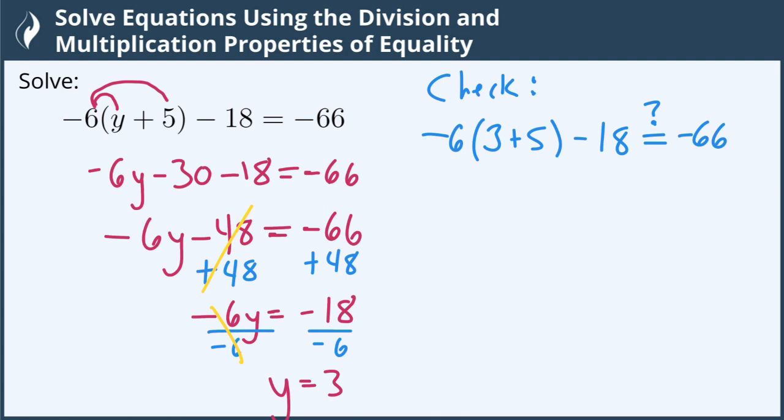We'll simplify the left side to see what it comes out to be. We'll start with what's inside the parentheses. So I now have negative 6 times 3 plus 5 is 8. Minus 18 hopefully equals negative 66.